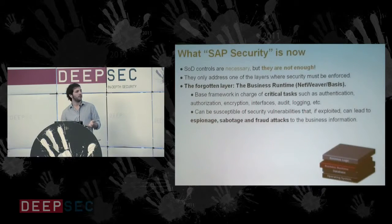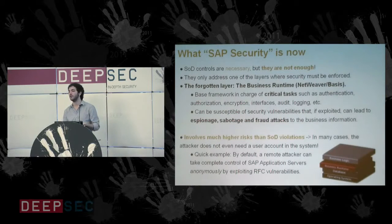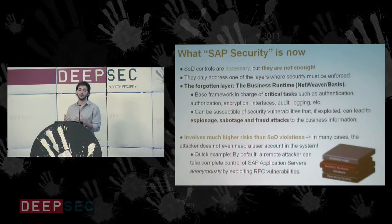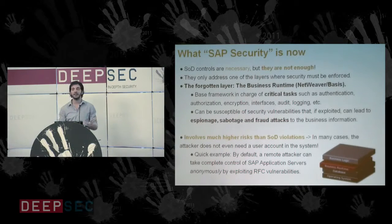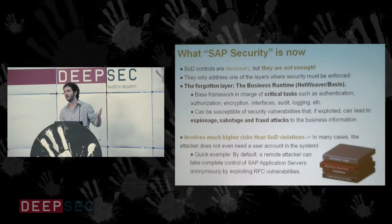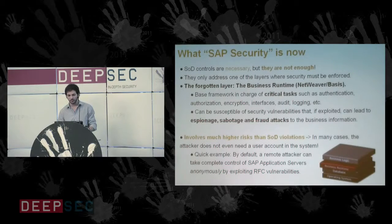To exploit a segregation-of-duties violation, an attacker first needs a user account in the system — a malicious employee who discovers he has more authorizations than he should. However, by exploiting vulnerabilities in the lower layers, the attacker doesn't even need a user account in many cases. In many default SAP installations, just knowing the IP address and being able to connect to certain services that are usually open, an attacker can end up fully compromising the system.